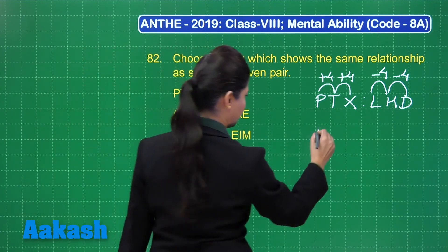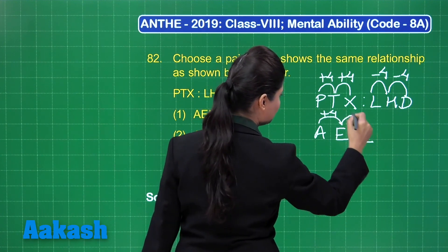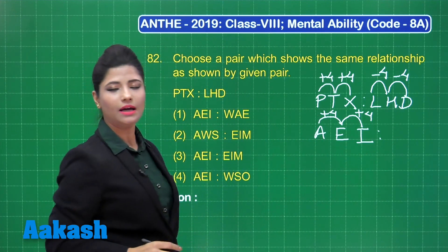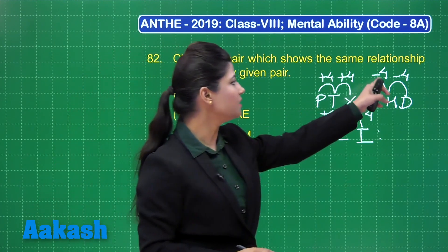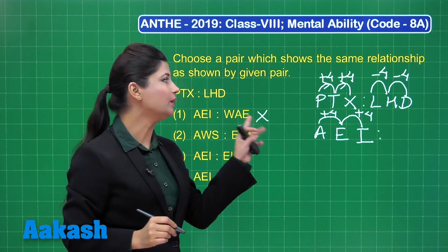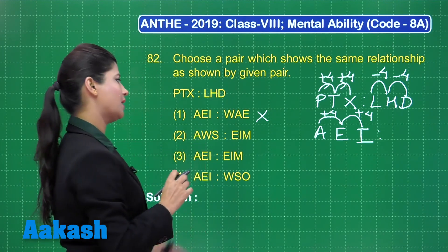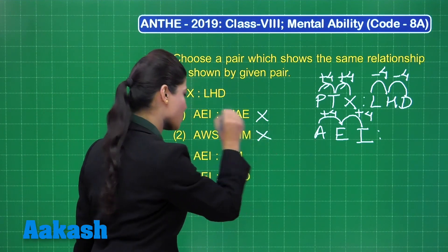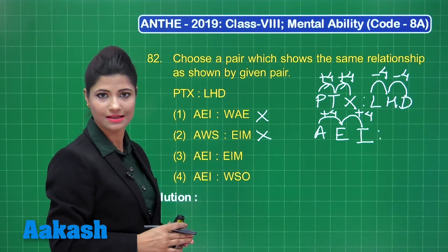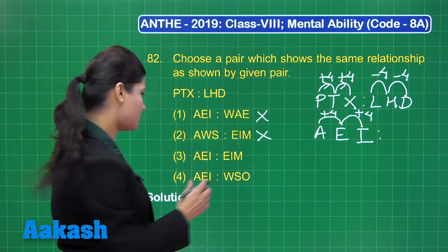Let us consider option AEI: from A to E is 4 positions ahead, and from E to I is also 4 positions ahead — so the first part is correct. Next, checking WAE: from W to A is 4 positions ahead, but we should be going backward, not ahead — so this does not follow. Checking AWS: from A to W is not 4 alphabet positions — it is more than that, so this does not follow either.